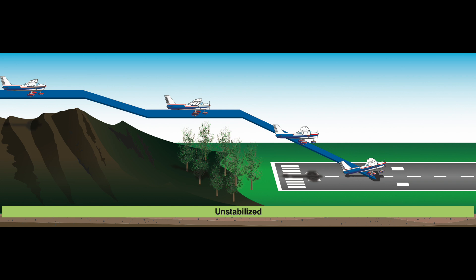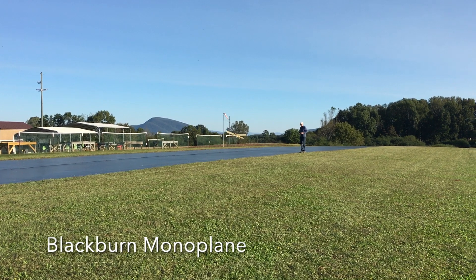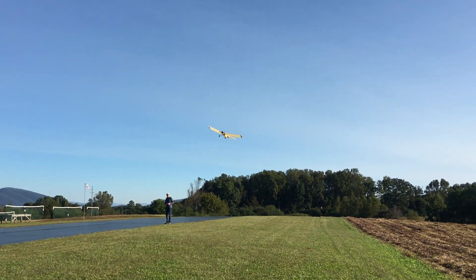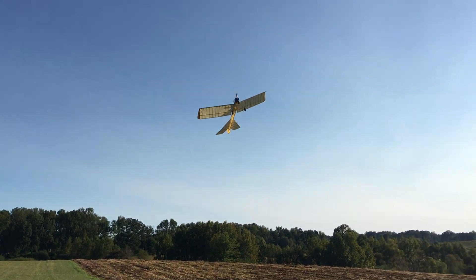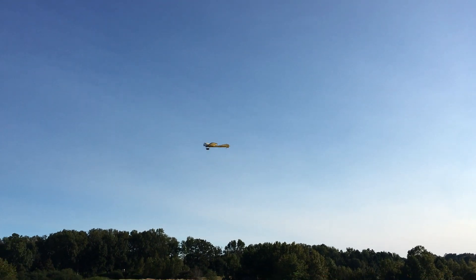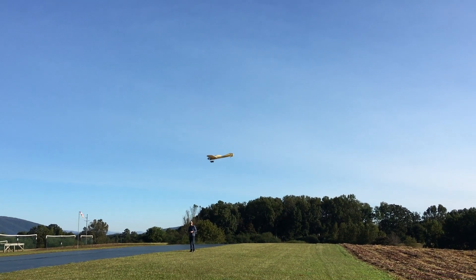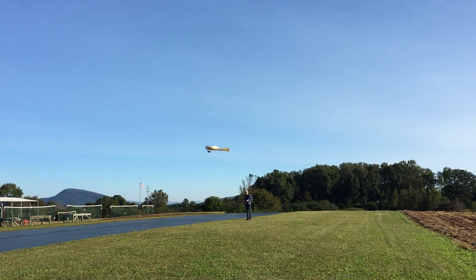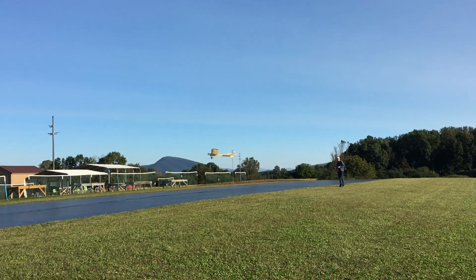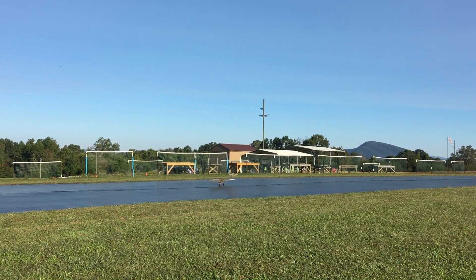For strong crosswinds, depending on your model, I oftentimes will land directly into the crosswind, even if it means landing across the runway or using a slow flyer. Flying at roughly the same airspeed as the wind speed, you can almost hover over the ground for a landing. Here we're coming in for a landing directly into the wind — the airspeed is approximately the wind speed, and the shadow over the ground is essentially zero, basically hovering in place to go down.